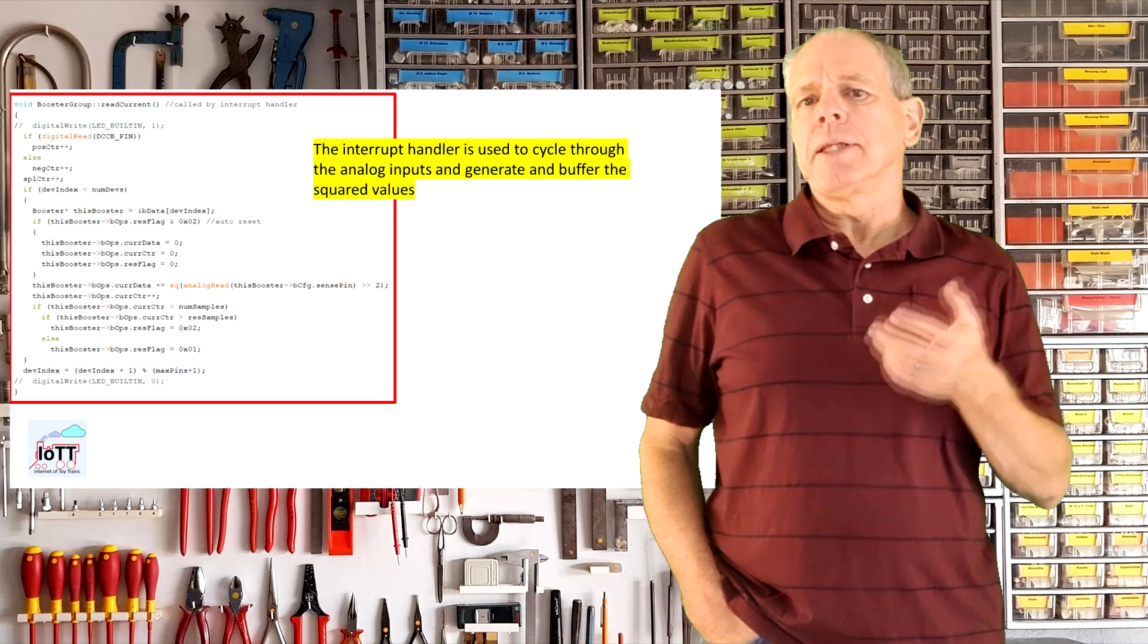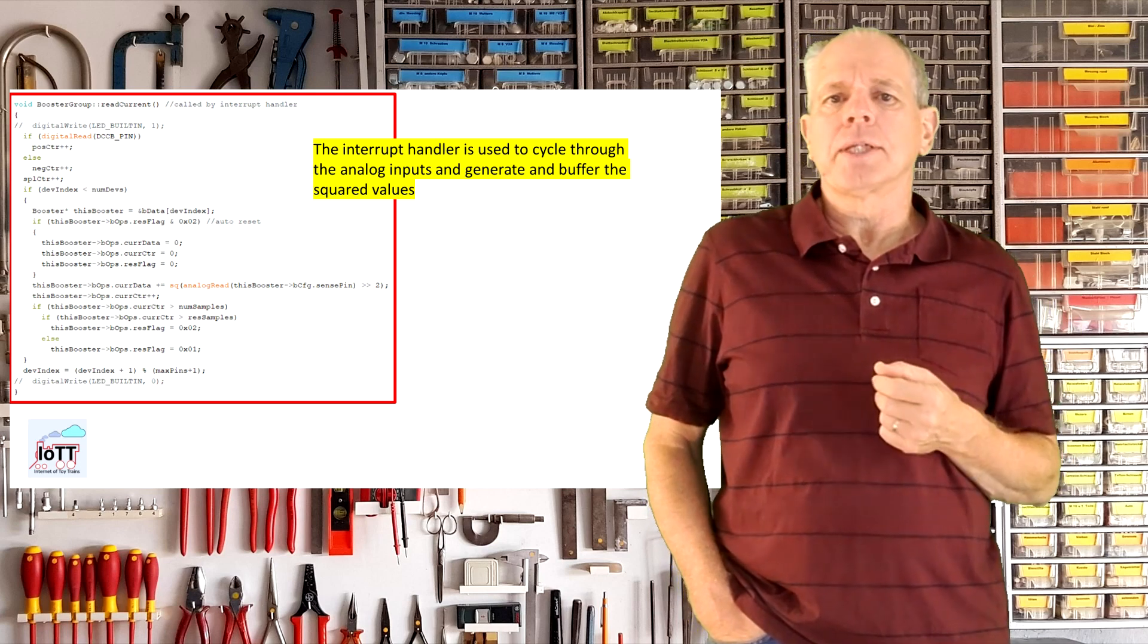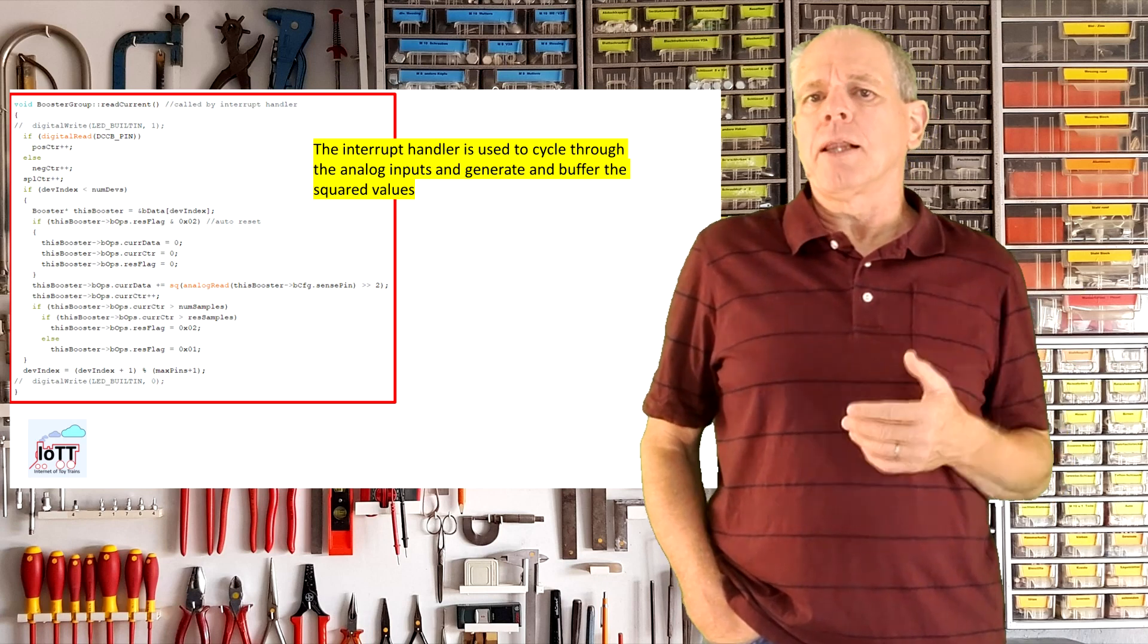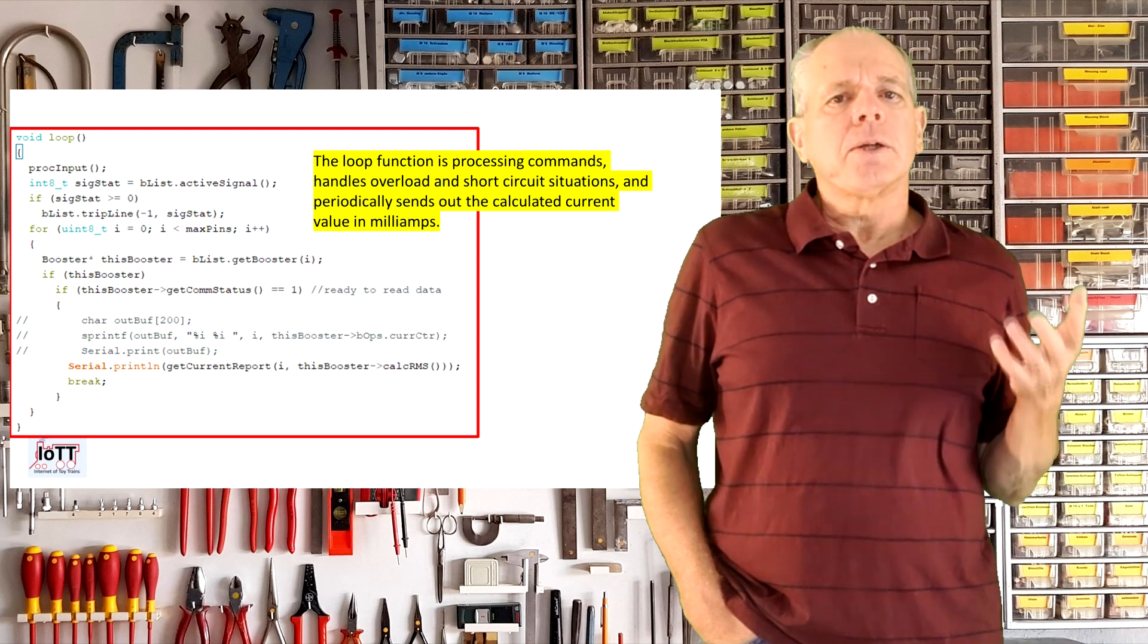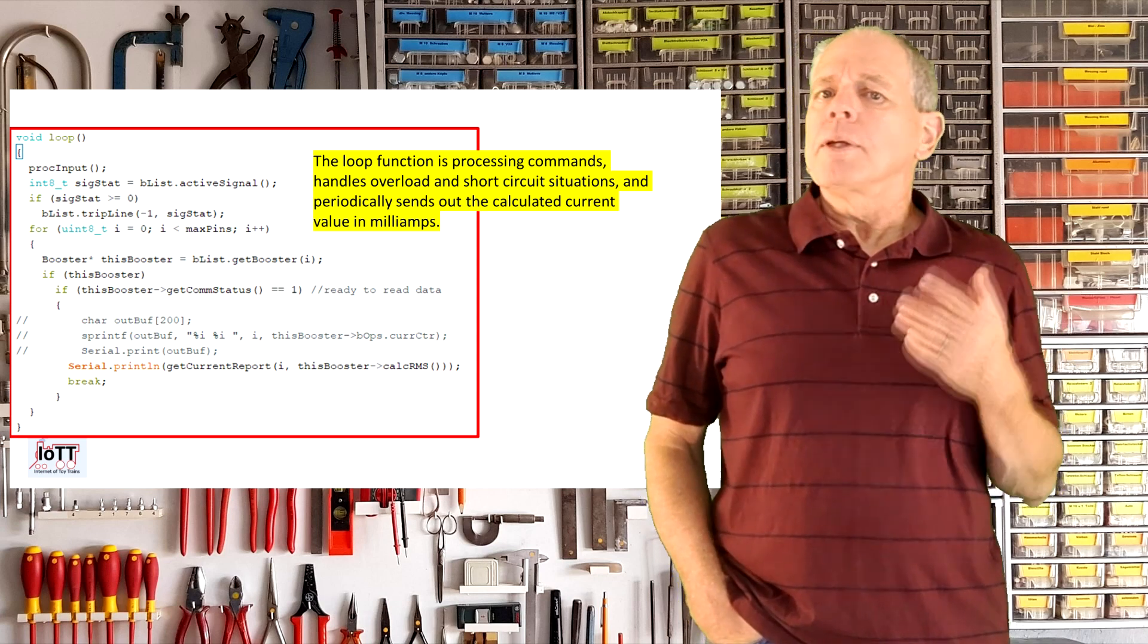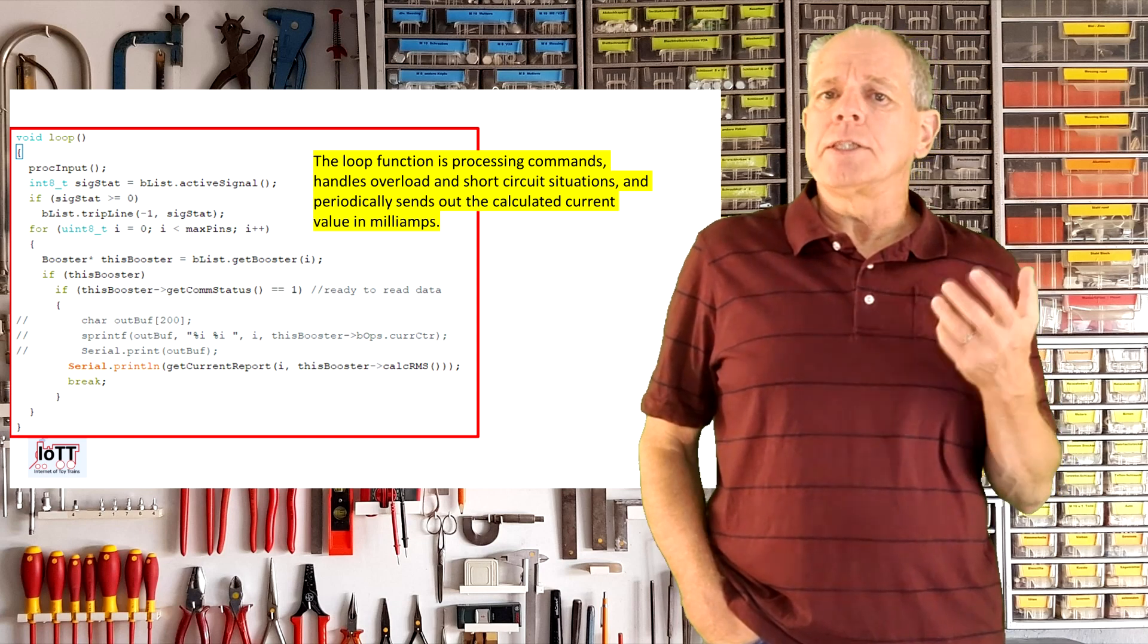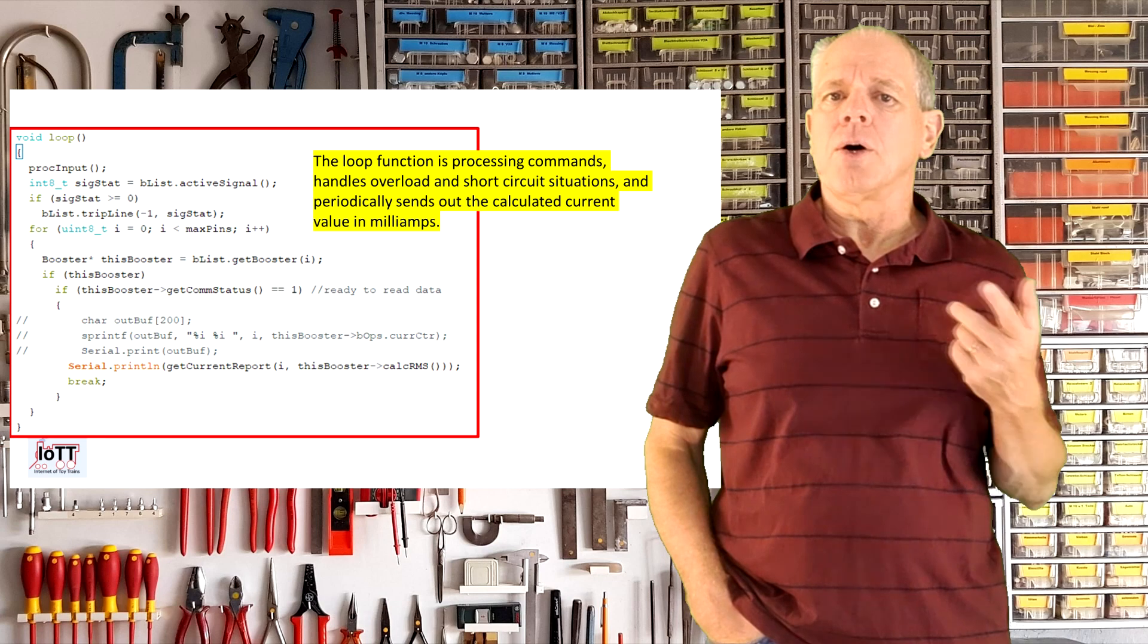Right now, I am using the timer interrupt for sampling with an interval of about 80 microseconds, which means that each input channel gets sampled about twice per millisecond. It turns out this is good enough for current measuring, but it remains to be seen if this is fast enough for reacting in case of a short circuit on the track.